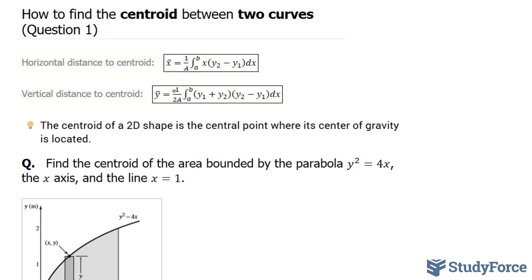We have to find the area bounded between 0 and 1 for the function with respect to x. So the area formula is the following. The integral between 0 and 1 for the function y is equal to the square root of 4x.